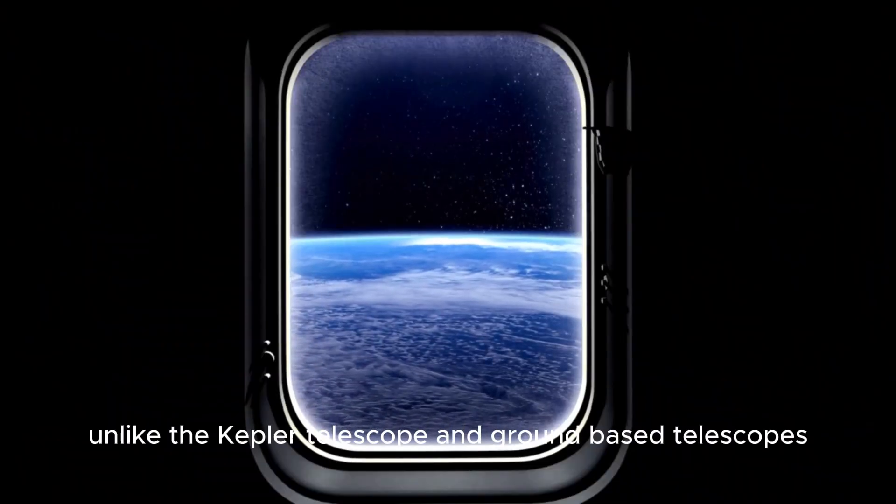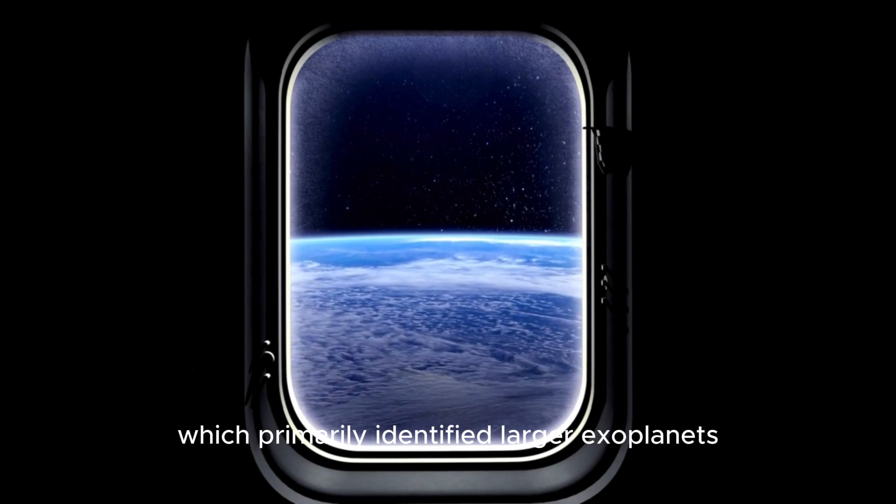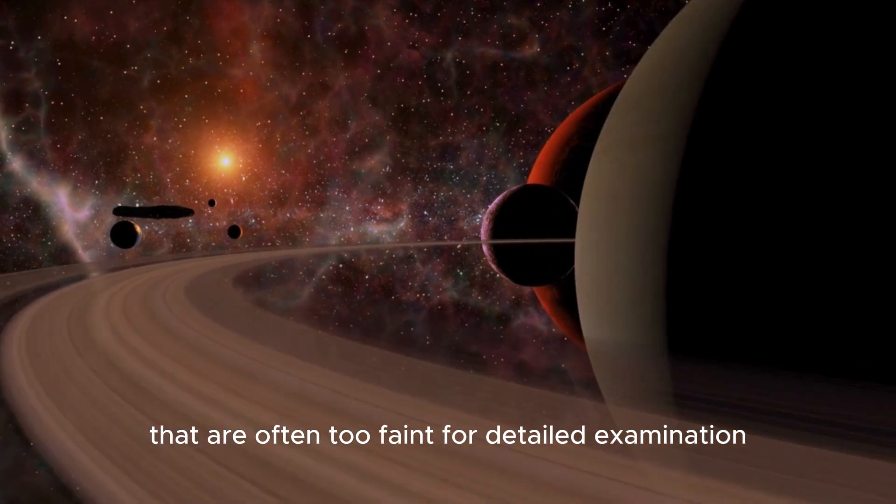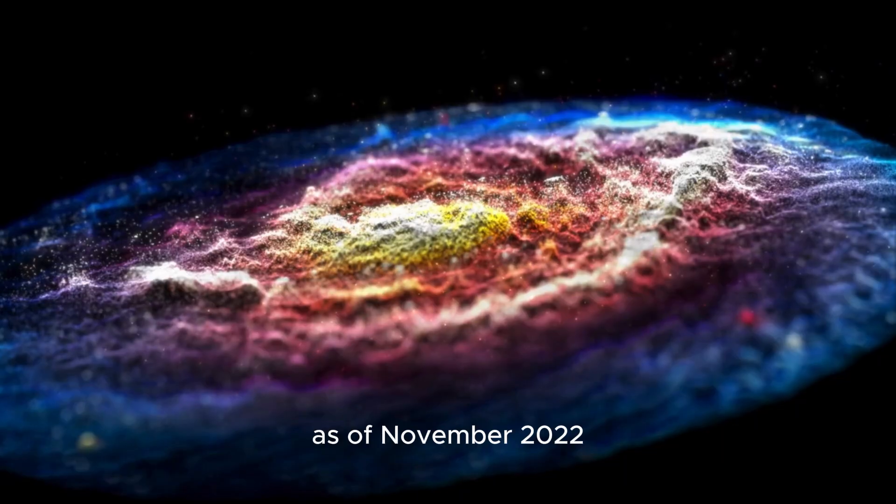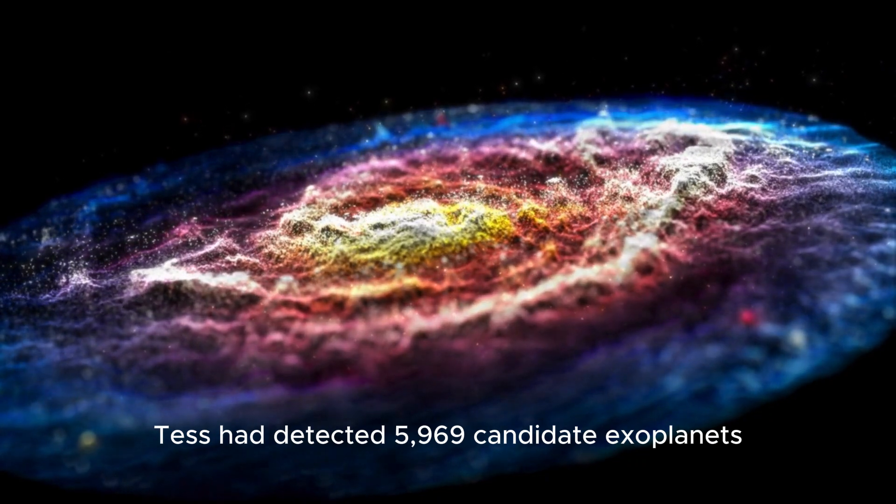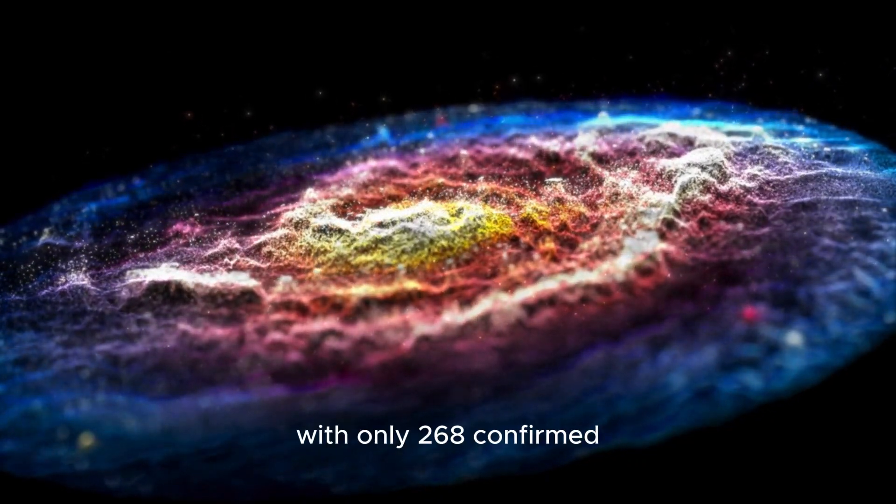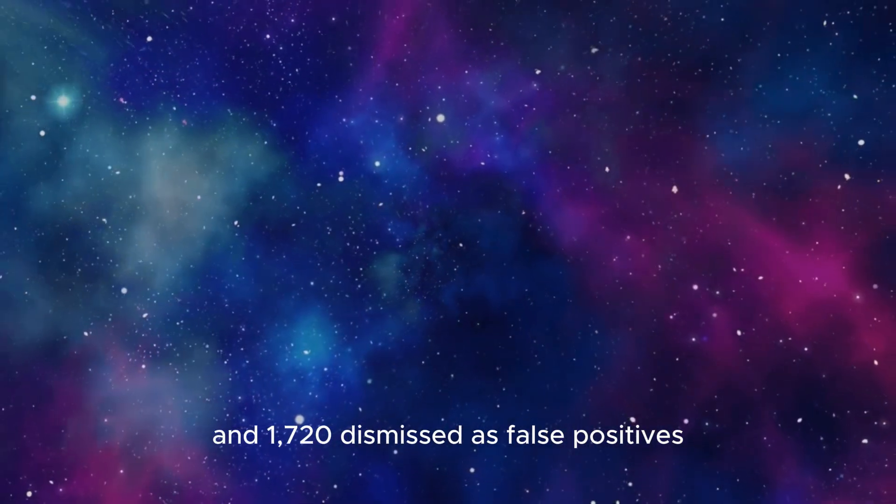Unlike the Kepler Telescope and ground-based telescopes, which primarily identified larger exoplanets, TESS has helped uncover planets around distant stars that are often too faint for detailed examination. As of November 2022, TESS had detected 5,969 candidate exoplanets, with only 268 confirmed and 1,720 dismissed as false positives.